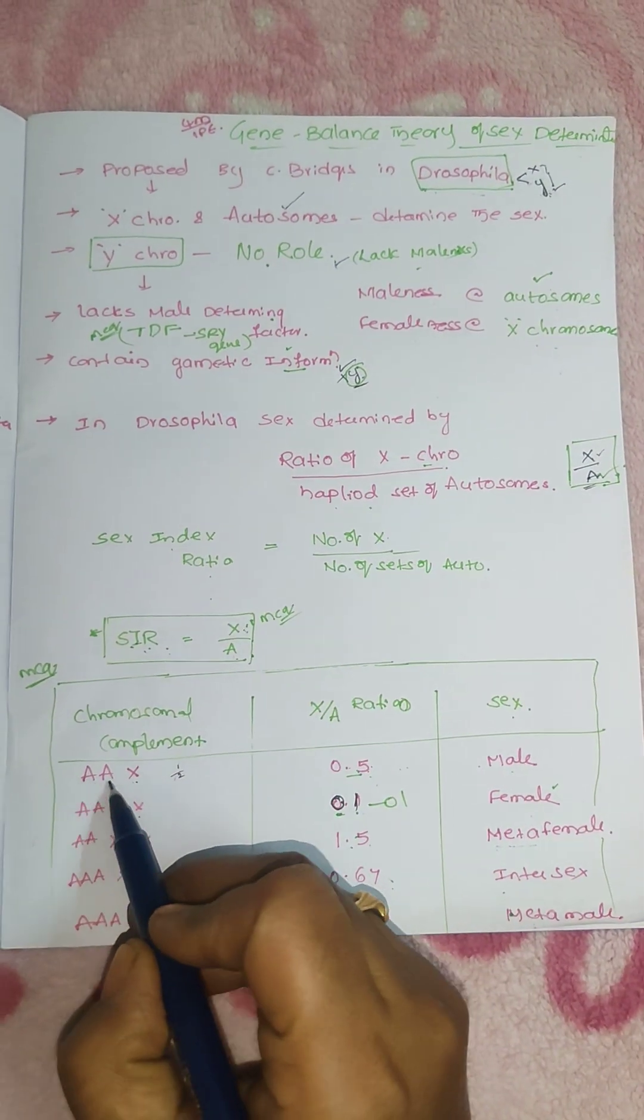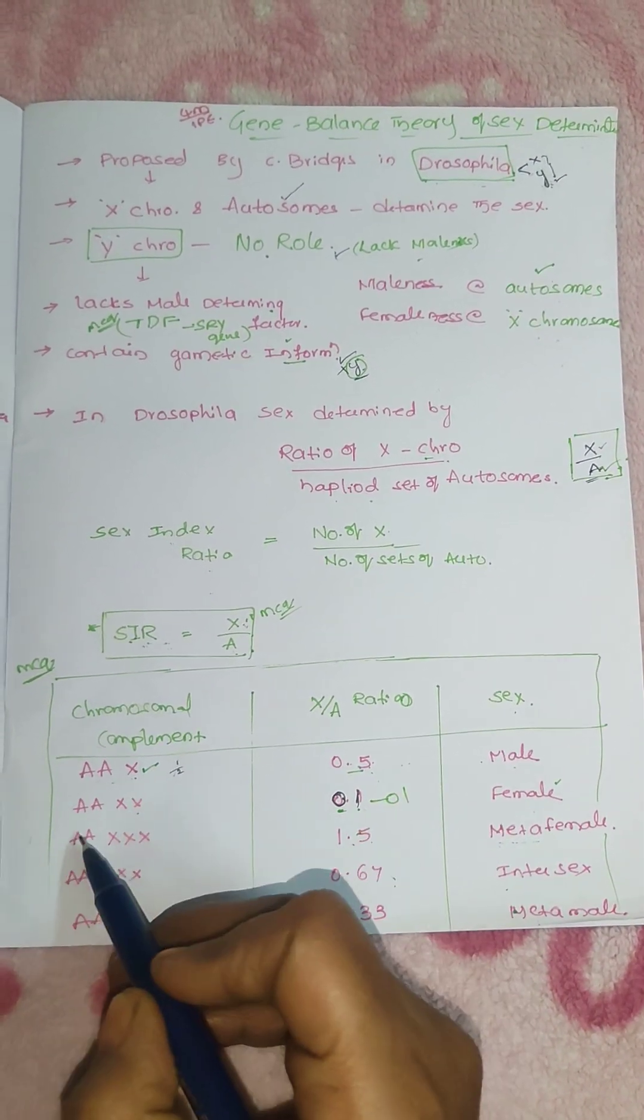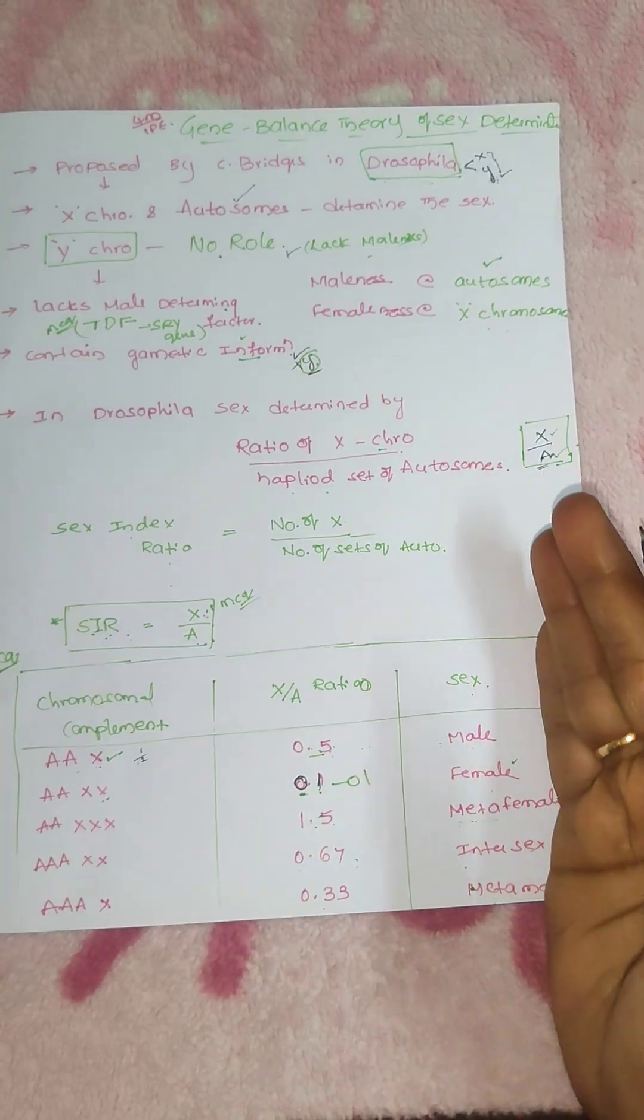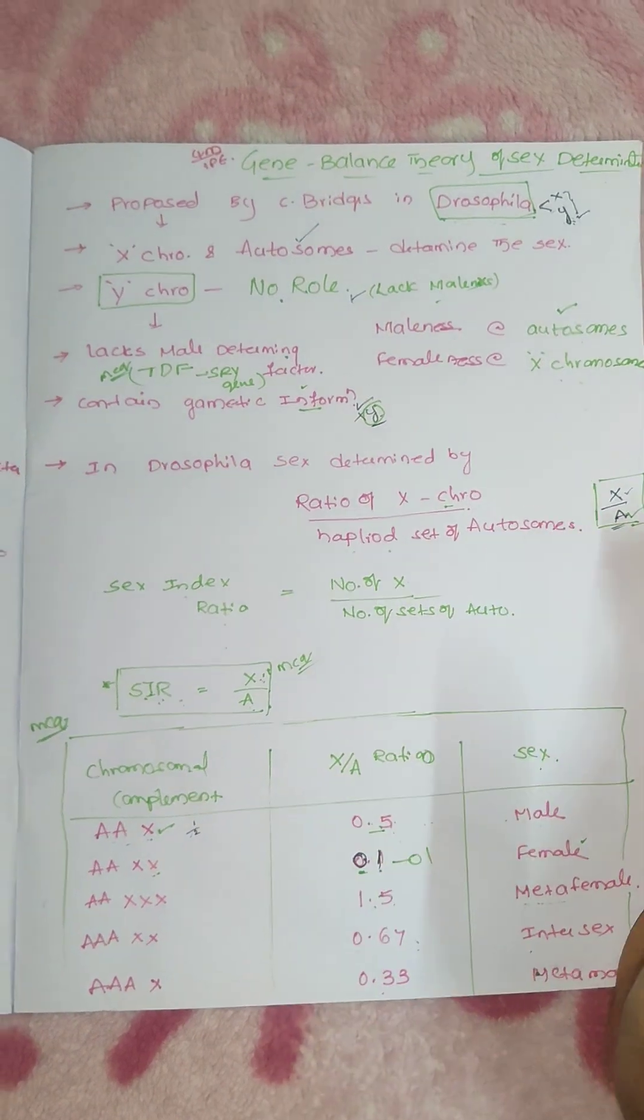And this 2 autosomes 1 X, 2 autosomes 2 X chromosome, that is why it is 1. So based on the ratio the sex is determined by the autosome itself.